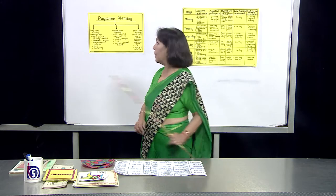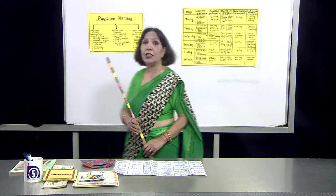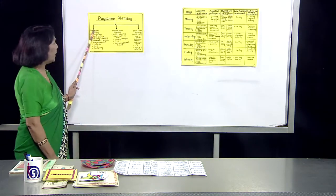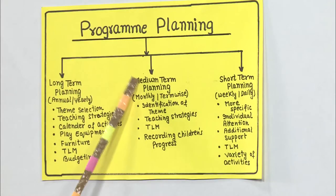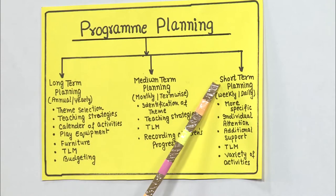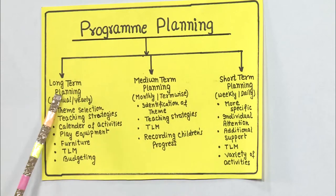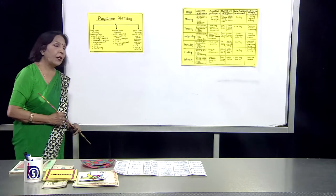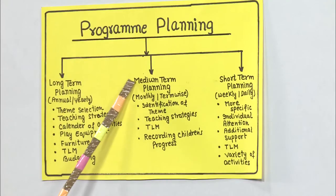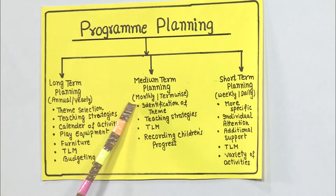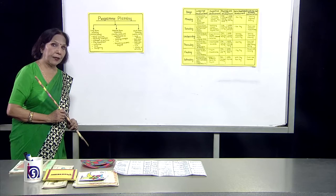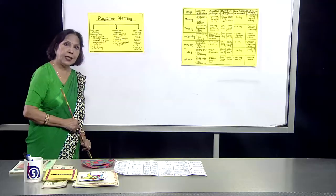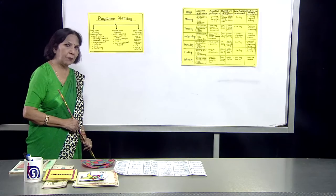Program planning is of three types: long-term planning, medium-term planning, and short-term planning. Long-term planning is annual planning, medium-term planning is term-wise planning, and short-term planning is weekly and daily planning.